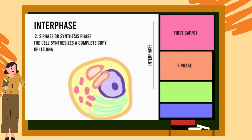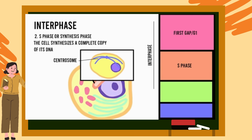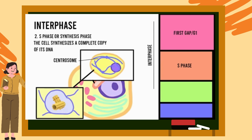Furthermore, during the synthesis phase, a structure known as the centrosome is also duplicated. Each centrosome comprises two microtubules known as centrioles. The two centrosomes will be critical in the later stages of the cell cycle, especially in the movement of DNA during cell division.